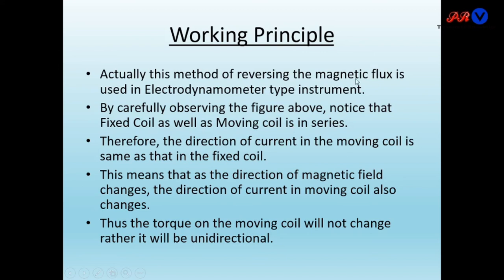This method of reversing the magnetic flux is used in electrodynamometer type instruments. By observing the circuit, notice that the fixed coil and the moving coil are connected in series. Therefore the direction of current in the moving coil is the same as in the fixed coil. This means that as the direction of the magnetic field changes, the current direction in the moving coil also changes, so the torque on the moving coil remains unidirectional.